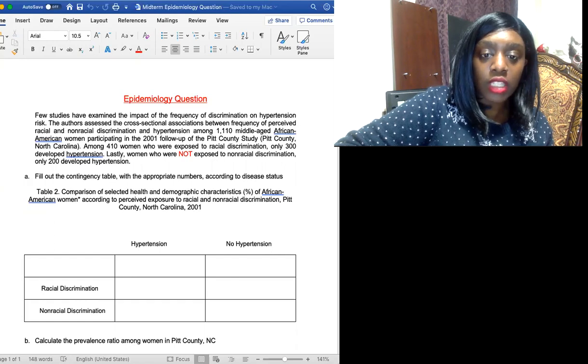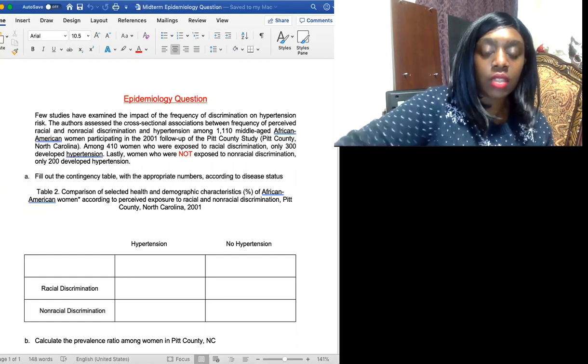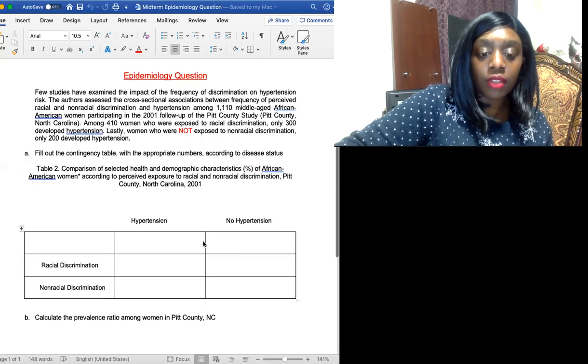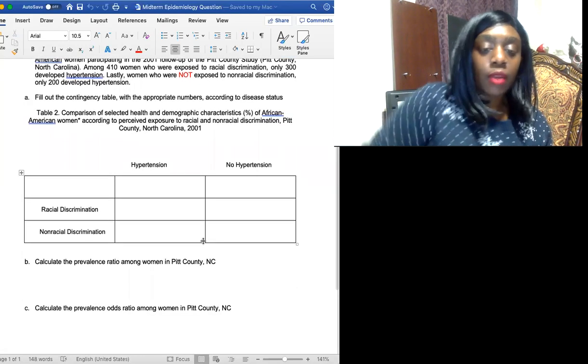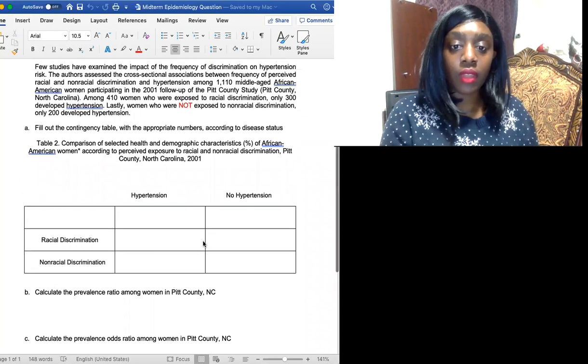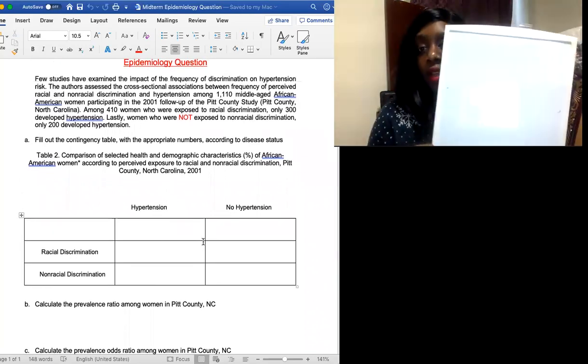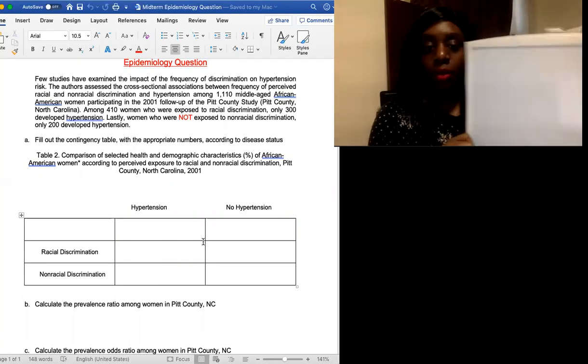Lastly, women who are not exposed to non-racial discrimination, only 200 develop hypertension. Part A: fill out the contingency table with the appropriate numbers according to disease status. So here as you can see we have this two by two table and we're going to fill it out together based on the information that's provided and I have this small whiteboard to help with it.